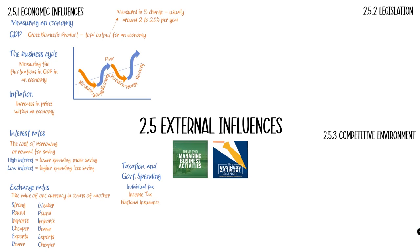In terms of taxation and government spending, we need to understand how government receives tax. There is individual tax such as income tax or national insurance, and there is business tax such as corporation tax and VAT — technically VAT also counts as an individual tax because businesses typically pass it on to consumers. The government uses this tax revenue to fund public services: schools, healthcare, and a variety of other things. The government needs to generate money just like a business does, and tax is how they do that.